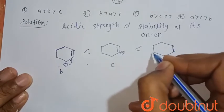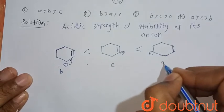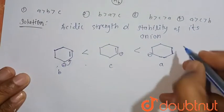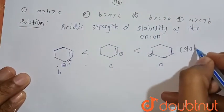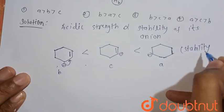So here, simply after removal of A, this is the stability order of the carbanion or anion after removal of the H+. This is the stability order.